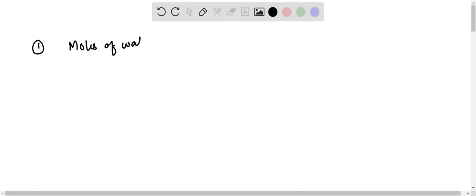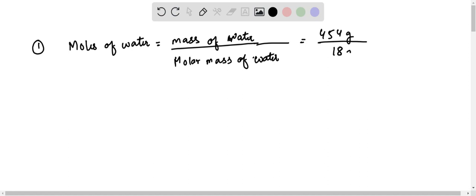Moles of water will be what? Mass of water divided by molar mass of water. And this is actually 454 given to us in problem, that is 454 grams of water. This is divided by 18. 18 is gram per mole, the molar mass of water.